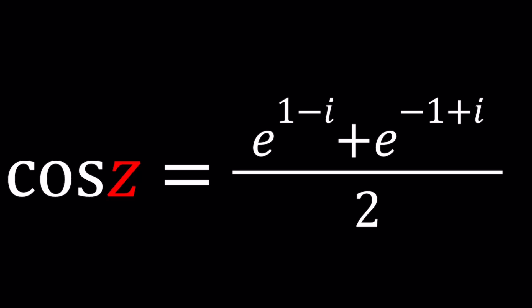Trigonometric, exponential, complex, imaginary — you name it. We have cosine of z equals e to the power 1 minus i plus e to the power negative 1 plus i divided by 2, and we're going to be solving for z. We're going to be using a couple different approaches here, and towards the end we're going to look at the results from Wolfram Alpha and see if Wolfram Alpha can handle something like this.